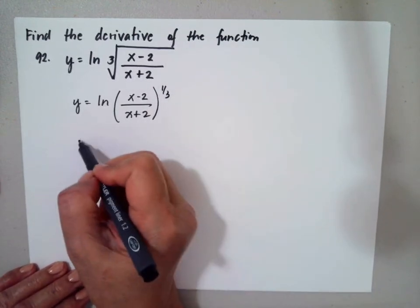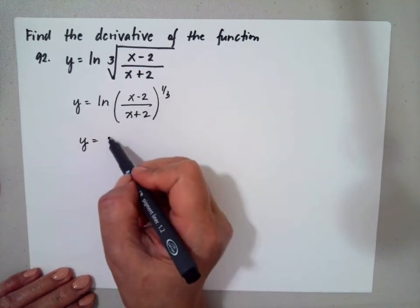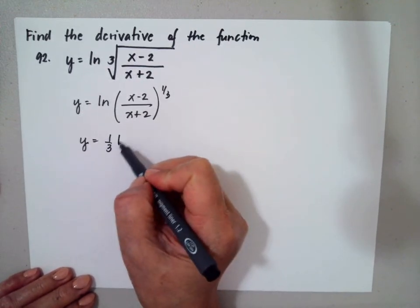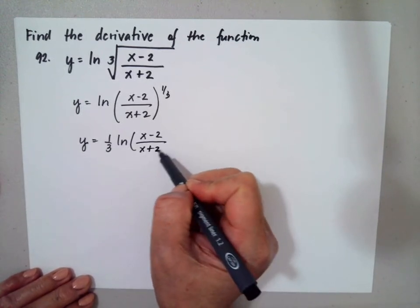Using the properties, the exponent turned to be the coefficient. So we have 1 third ln of x minus 2 over x plus 2.